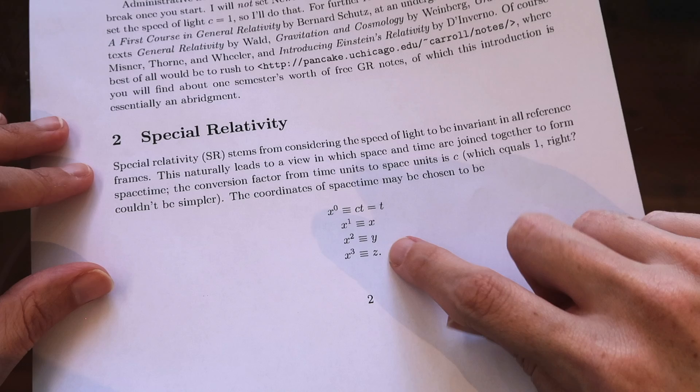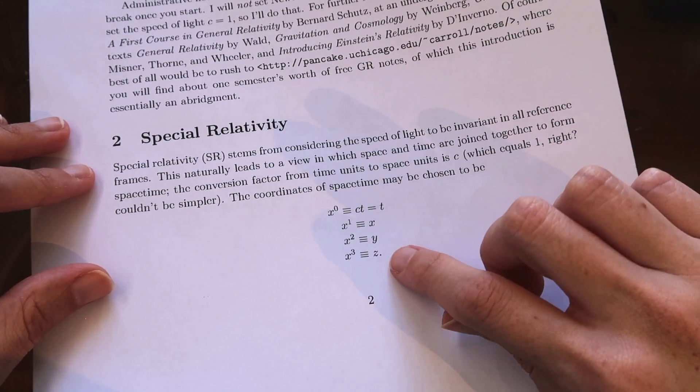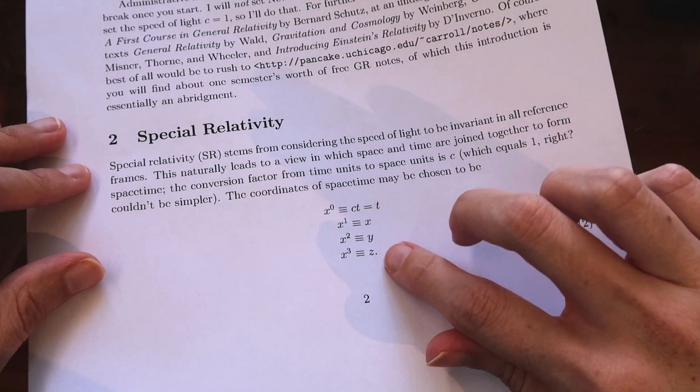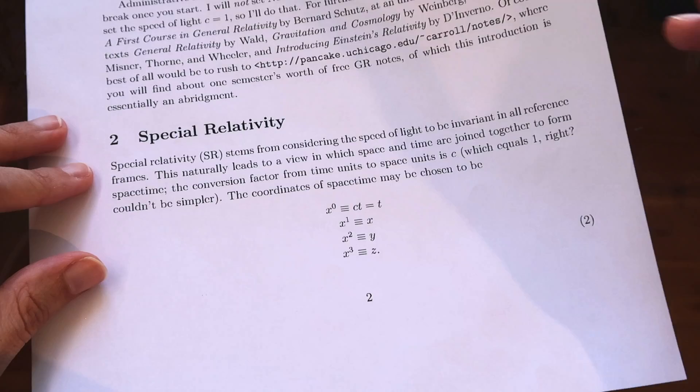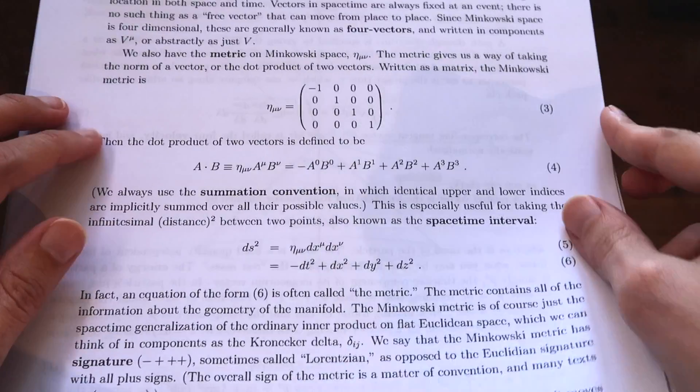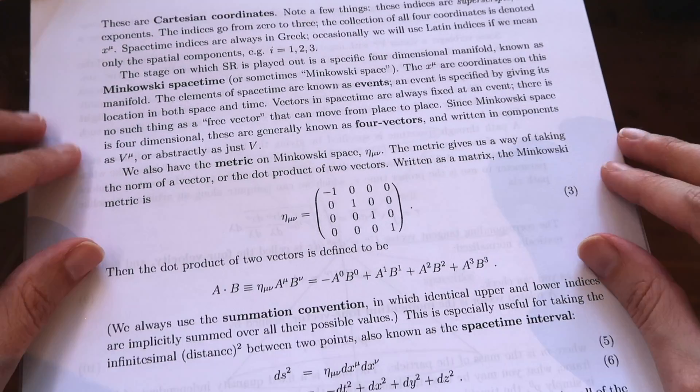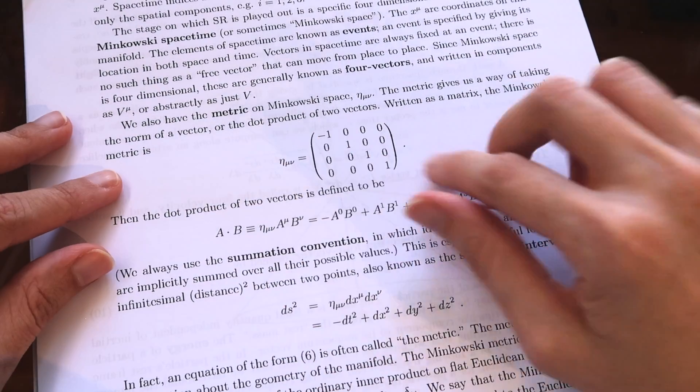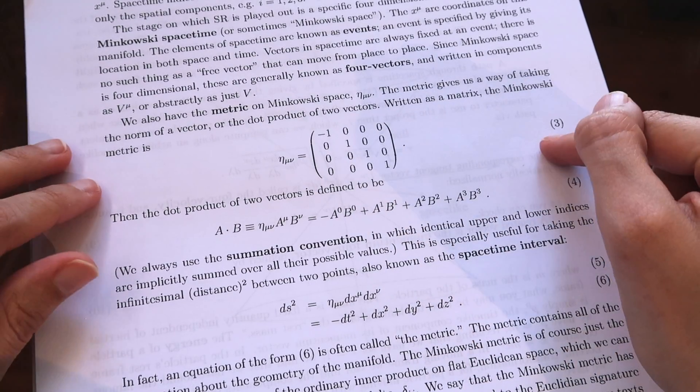See we have four components of our x vector including t, x, y and z so we have three spatial components and one time component. All four of these components making up space time. All of our vectors in space time will be four vectors including a special one the metric which gives us a way of taking the dot product of two vectors.